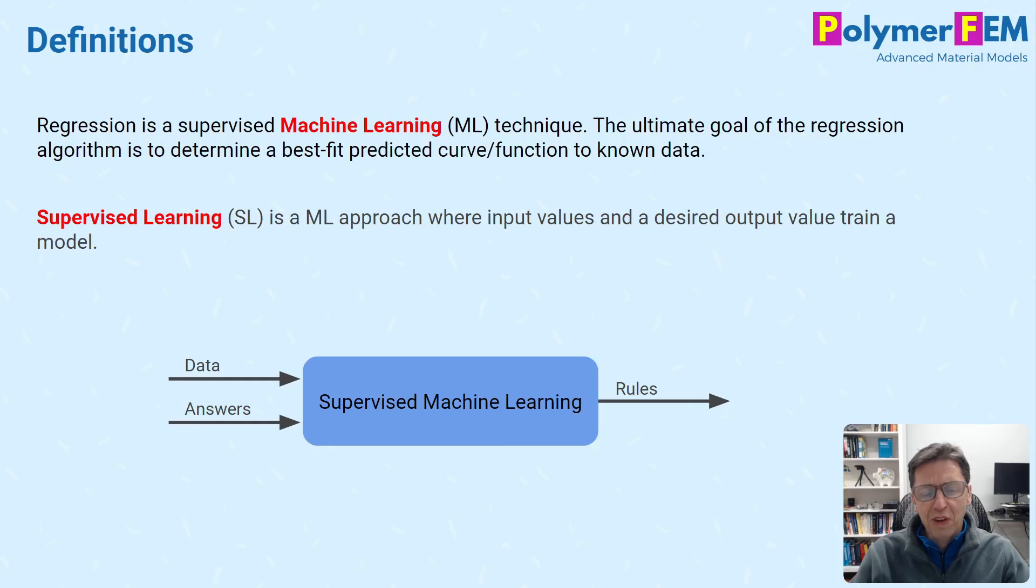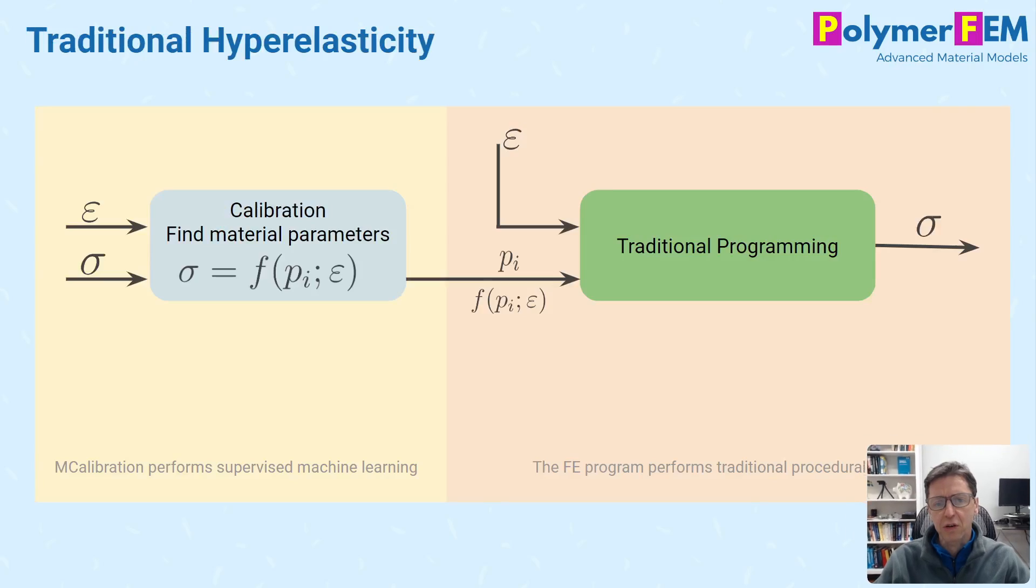The word supervised learning is also very commonly used in the literature. Supervised learning is an approach where you use both the input values and the desired output to train the machine learning technique, the neural network. When we're talking about calibration of a material model, we actually talk about a supervised learning approach because we use both the strain as the input and the stress which is the output to calibrate the material model. So it's regression and therefore it's a supervised machine learning technique.